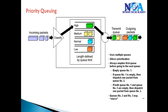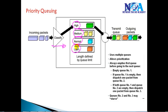The next queuing mechanism is called priority queuing. Priority queuing allows you to arrange packets into four different queues: high, medium, normal, and low priority traffic. For example, voice traffic and video traffic can be considered very high priority, database traffic as medium priority, HTTP as normal priority, and FTP as very low priority traffic.